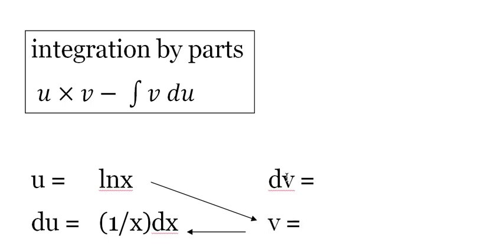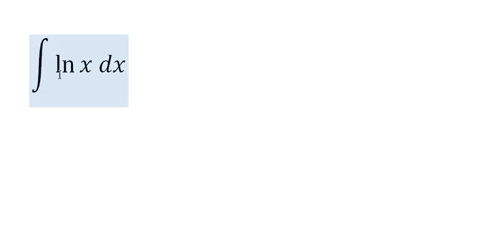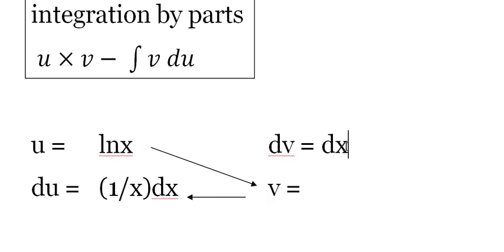Now what's our dv? Our dv is anything that you didn't use as your u. Since our natural log of x was our u, that means your dv is dx because we didn't use that yet. It's dx.